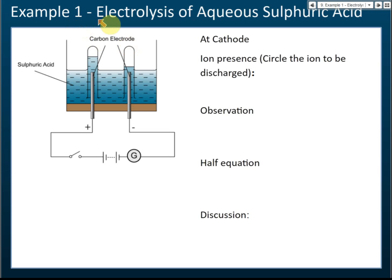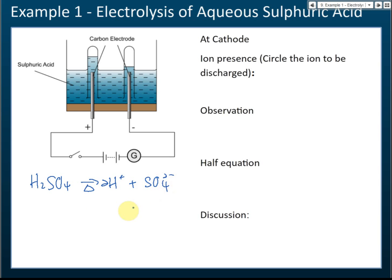Let's look at example one: electrolysis of aqueous sulfuric acid, H₂SO₄. When sulfuric acid dissolves in water, it forms hydrogen ions and sulfate ions. At the same time, since this is an aqueous solution, H₂O also dissociates to form hydrogen ions and hydroxide ions.